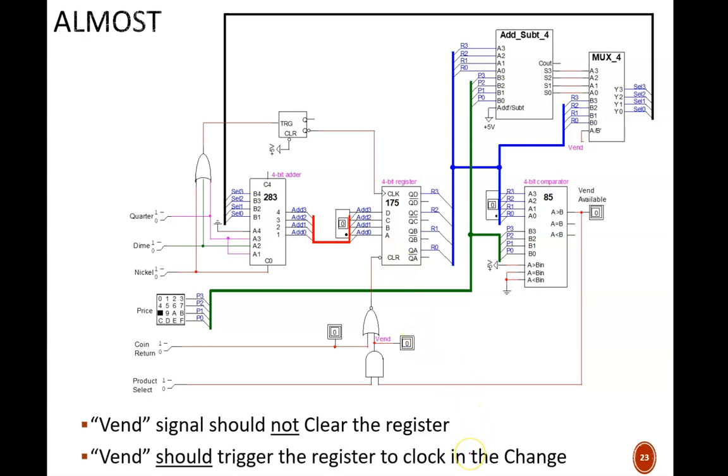The third mistake is related to this. Vending a product by pressing product select needs to tell the register to update by sending a positive edge to the clock port. So this OR gate should be expanded to include product select